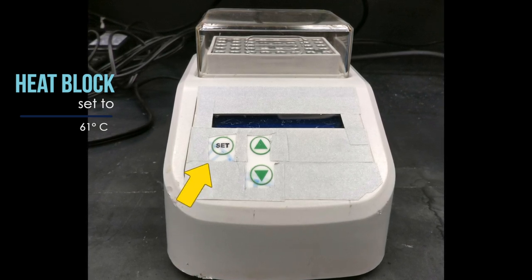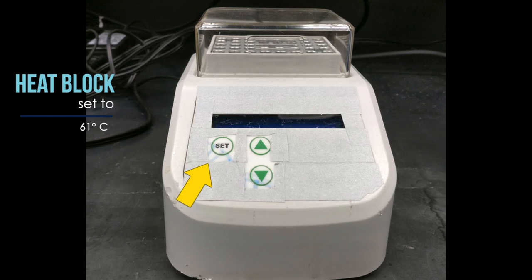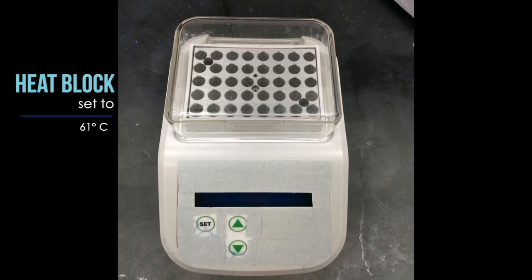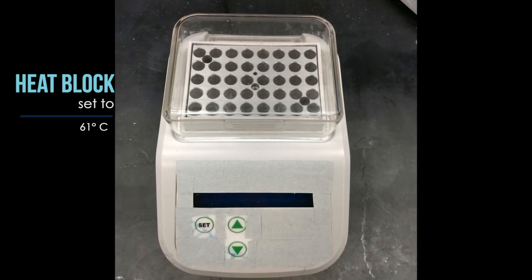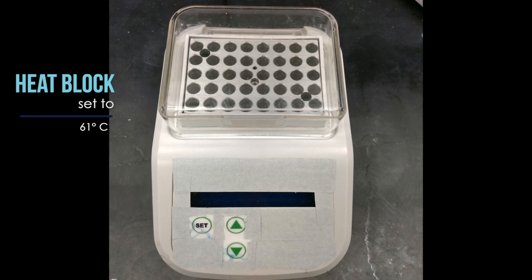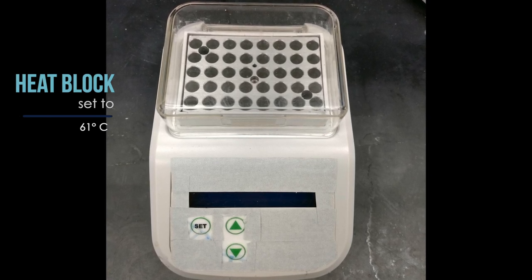We don't want to change the first digit, so we'll hit the set button again to edit the second digit and use the arrows to change the value. We hit the set button to move to the third digit and use the arrow to change the value. Once we get the temperature we want, we leave it alone and go mix our reagents.